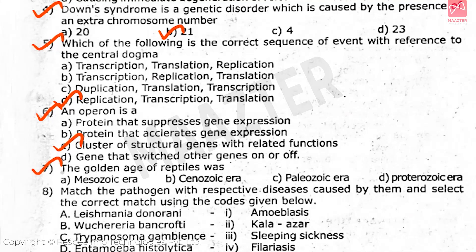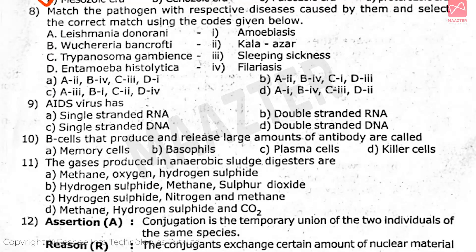Question 7: The golden age of reptiles was — the answer is option A. Question 8: Match the pathogen with the respective diseases caused by them and select the correct match using the codes given below — the answer is option A. Question 9: HIV virus has — the answer is option A.